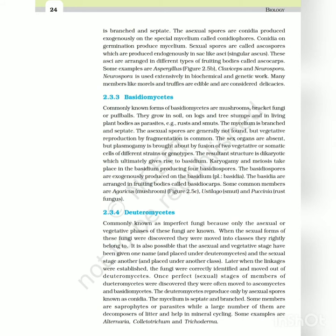Deuteromycetes - commonly known as imperfect fungi because only the asexual or vegetative phases of these fungi are known. When the sexual forms of these fungi were discovered, they were moved into classes they rightly belong to. It is also possible that the asexual and vegetative stage have been given one name and placed under deuteromycetes, and the sexual stage another and placed under another class. Later when the linkages were established, the fungi were correctly identified and moved out of deuteromycetes. Once perfect sexual stages of members of deuteromycetes were discovered, they were often moved to ascomycetes and basidiomycetes. The deuteromycetes reproduce only by asexual spores known as conidia. The mycelium is septate and branched. Some members are saprophytes or parasites while a large number of them are decomposers of litter and help in mineral cycling. Some examples are Alternaria, Colletotrichum and Trichoderma.